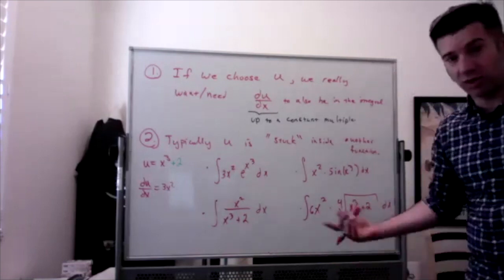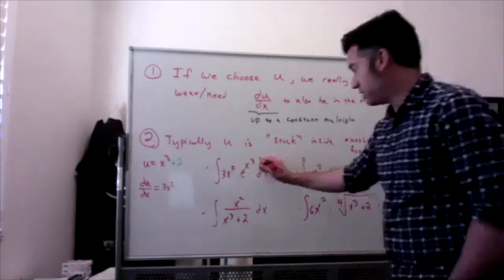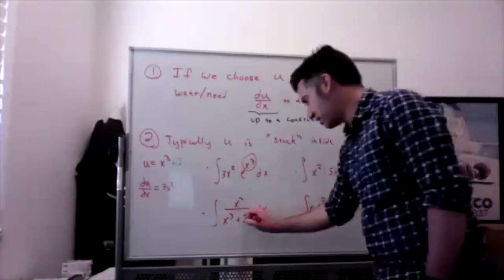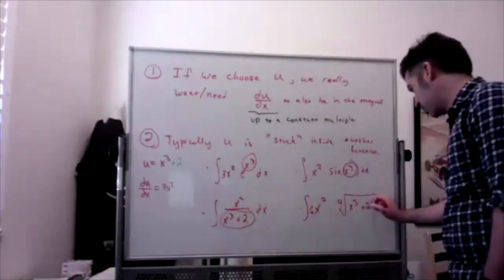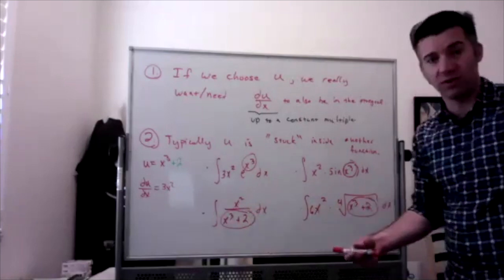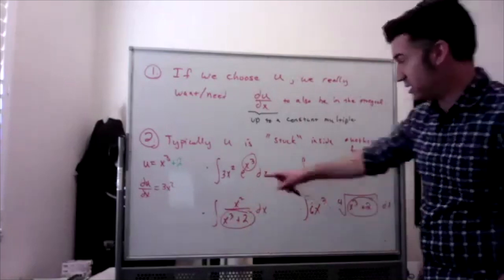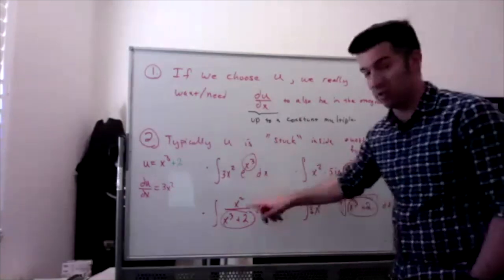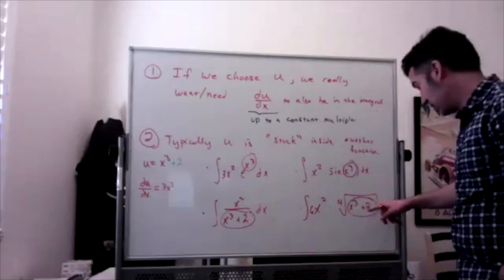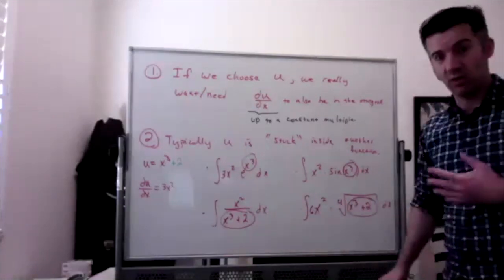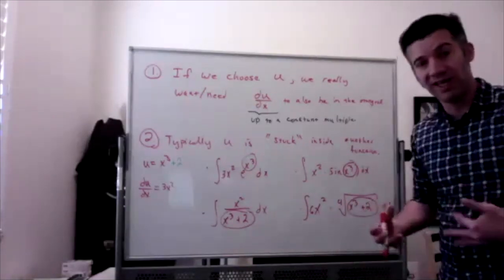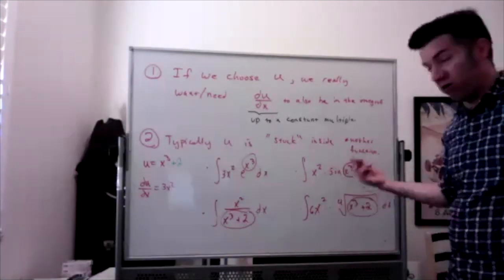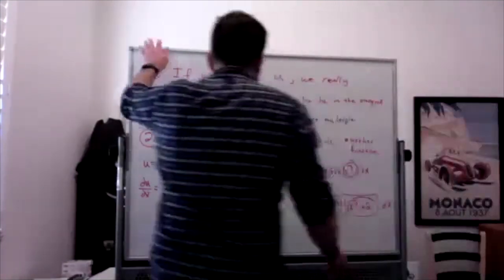All of those are good examples: x cubed, x cubed, x cubed plus 2, x cubed plus 2 — all of those are stuck inside some function. One is in the exponent of e, one is in the sine function, one is in the denominator, one is in the fourth root. Notice for the last one, I would actually make a slightly different choice — you may also want to choose u to be that something plus a constant, because constants come along for free. In fact, we can do all of these.